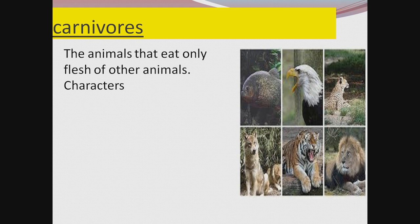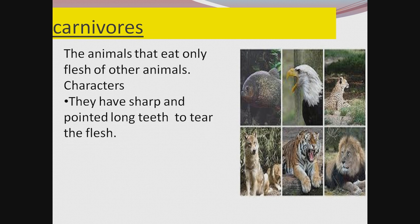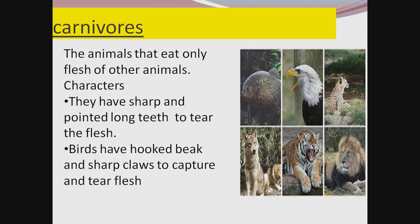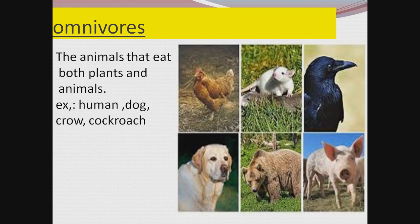Those animals that eat only the flesh of other animals are called as carnivores. What are the characteristics of carnivores? They have sharp, pointed, long teeth to tear the flesh. Birds have a hooked beak — as you can see, the eagle has a hooked beak and sharp claws to capture and tear the flesh of any organism. These side pointed teeth are very well developed in carnivores, which help to tear the flesh from the bone.